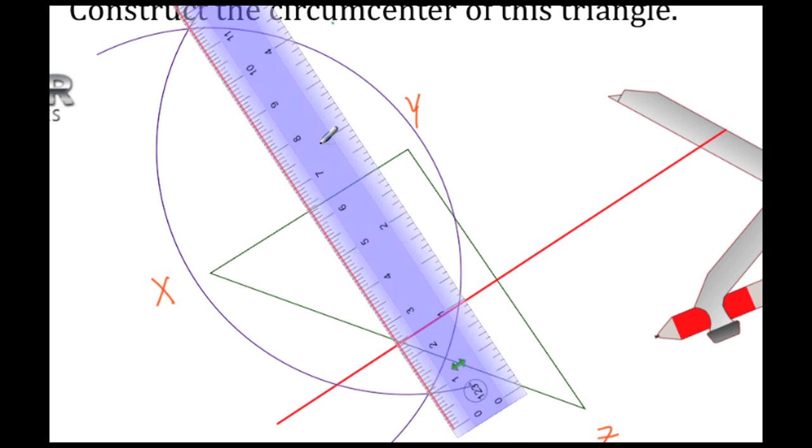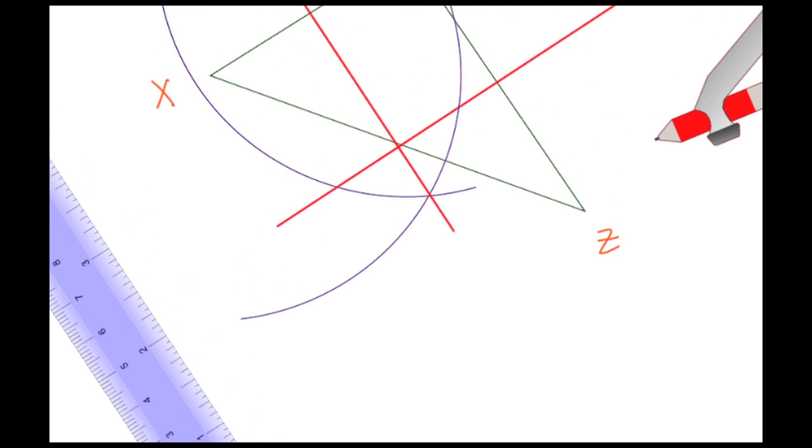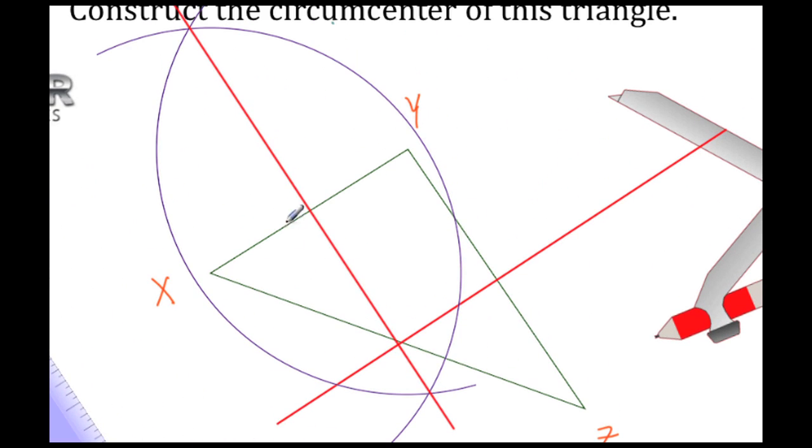Let's move the ruler out of the way and do some cleanup here. Let's get rid of that arc, that arc there, and clean that up.